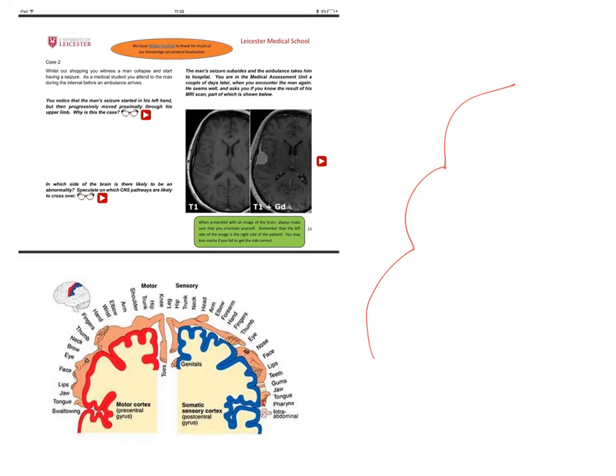one cause of seizures is a bit of abnormal brain. So there might be a little area of the cerebral cortex, for example here where this green blob is which is abnormal, the neurons are not working properly and they're having a tendency to fire excessively.